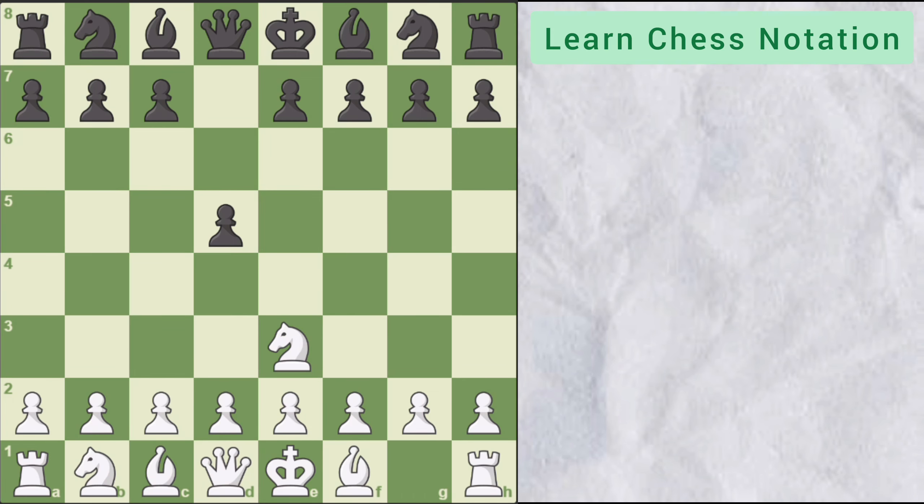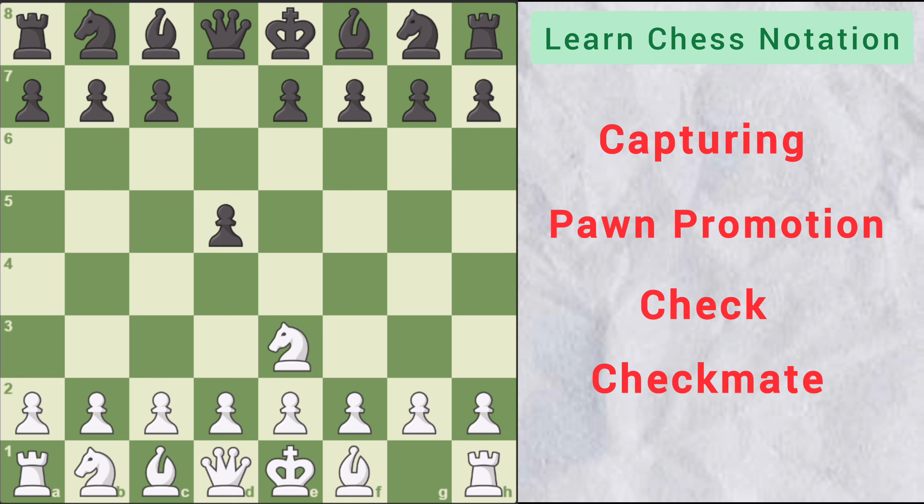Now let's learn some special symbols that we use in chess notation. For every special move like capturing other piece, pawn promotion, check and checkmate, special symbols are used. Let's see all of them one by one.